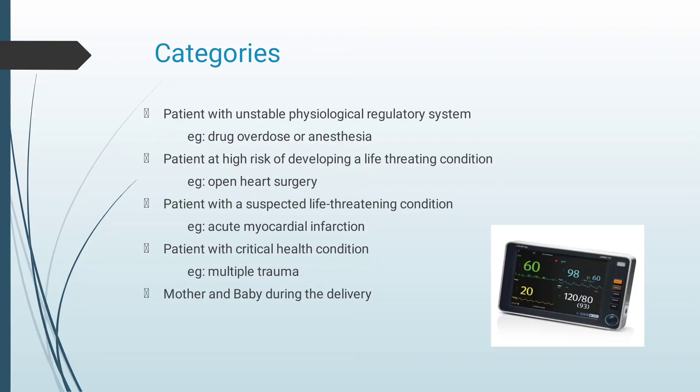Categories: There are five categories. The first is patients with an unstable physiological regulatory system, for example drug overdose or anesthesia. Second, patients at high risk of developing a life-threatening condition, for example open heart surgery. Third, patients with a suspected life-threatening condition, for example acute myocardial infarction. Fourth, patients with a critical health condition, for example multiple trauma. Fifth, it is also required during mother and baby delivery.